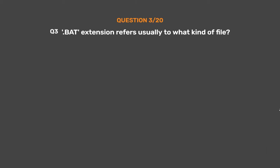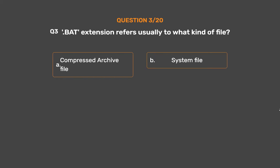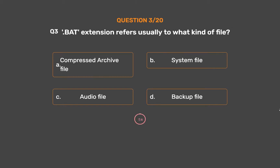Question number 3. The .bat extension refers usually to what kind of file? Option A: Compressed archive file. Option B: System file. Option C: Audio file. Option D: Backup file.